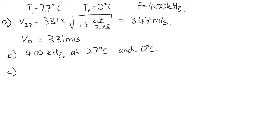And Part C, we were asked to calculate the wavelength. The wavelength at 27 degrees C is equal to the velocity at 27 degrees C over the frequency, which is 347 over 4,000.